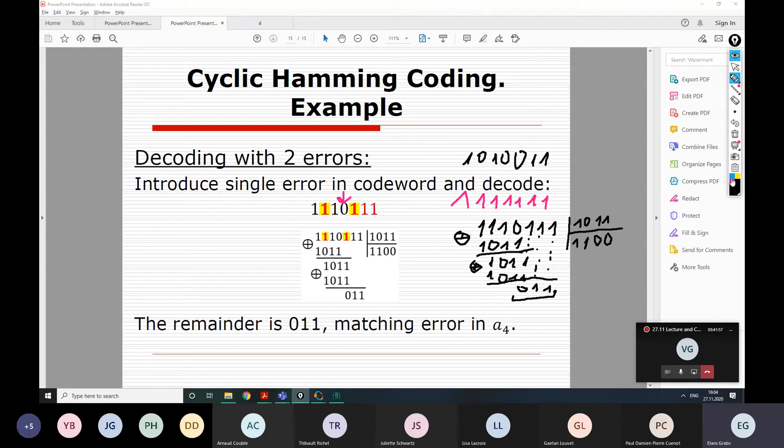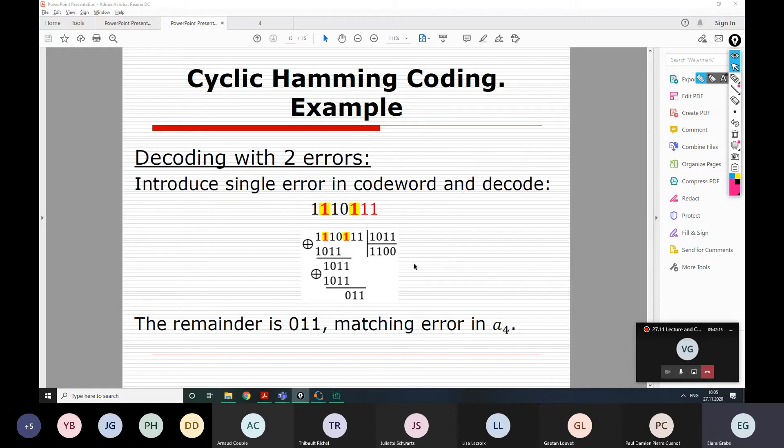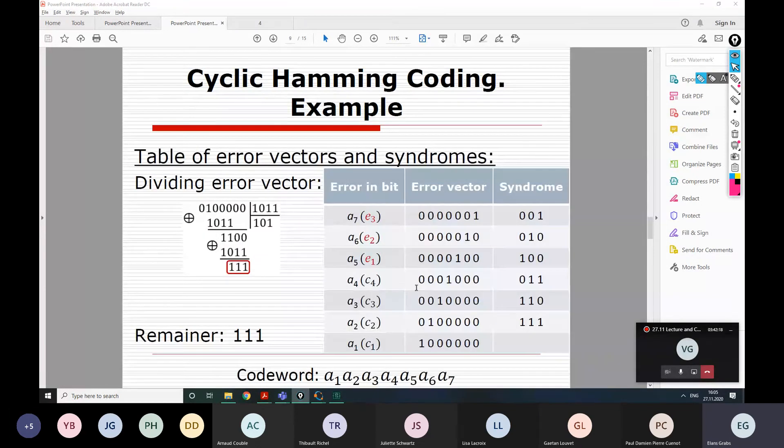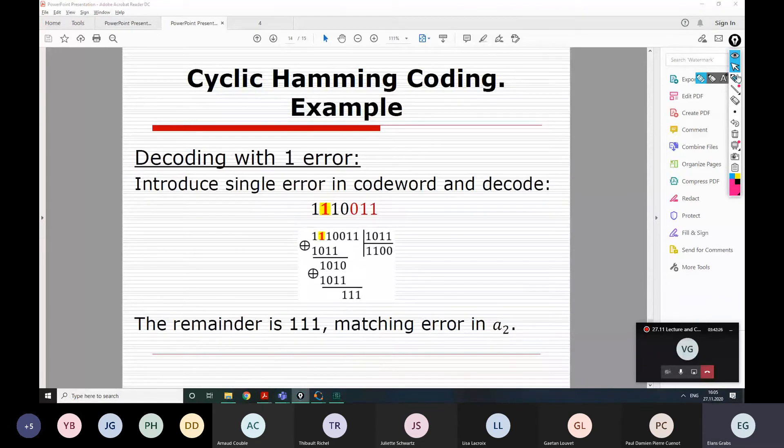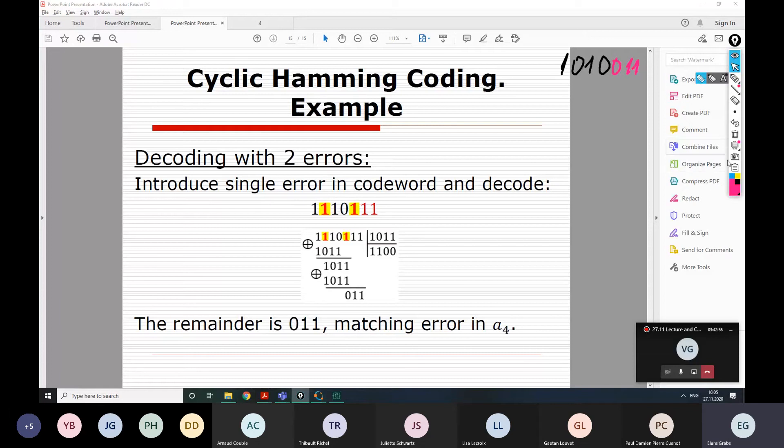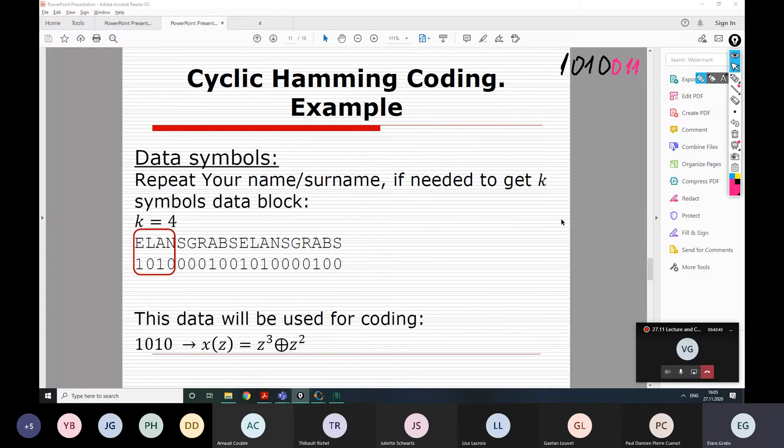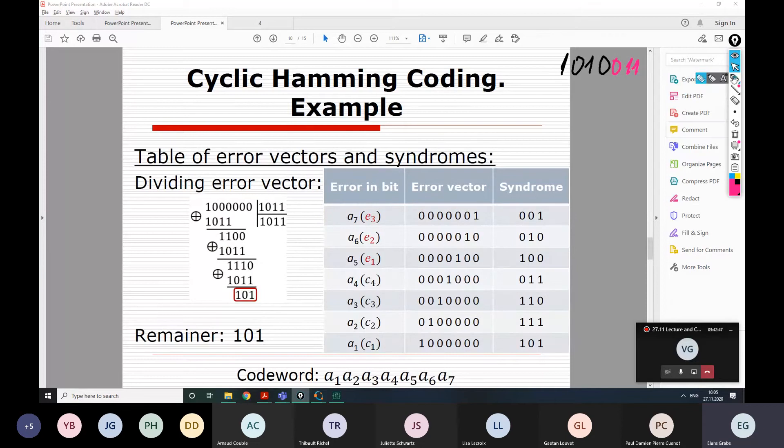Unfortunately, it can turn out that it's even impossible to detect the error. For example, let's see the case of three errors in our codeword. So my codeword was 1, 0, 1, 0, 0, 1, 1. And now I'm going to make errors in three positions, not two. You don't have to do that for your course project. I just want to show you this final moment.